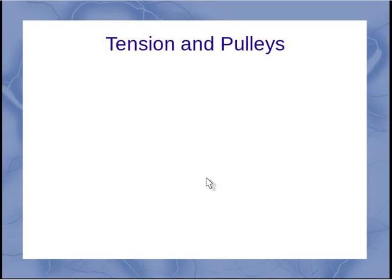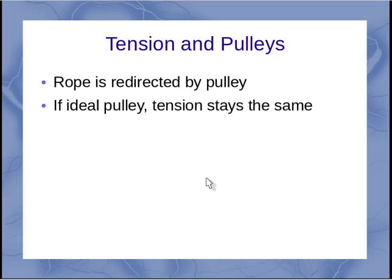Now last, I want to talk about tension and pulleys. So a rope can be redirected by a pulley. But if it's an ideal pulley, it doesn't change the tension. And an ideal pulley, it's pretty much one that doesn't have any friction as the rope passes over it.